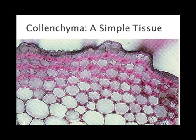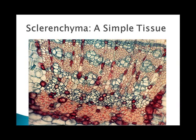Colenchyma cells are thickened and help to strengthen the plant — for example, the strings in celery. It's commonly arranged as strands or cylinders beneath the dermal tissue of the stems and stalks. The primary cell walls of colenchyma become thickened with cellulose and pectin at maturity, often at their corners. Sclerenchyma cells provide mechanical support and protection in mature plants. Their secondary walls are thick and often impregnated with lignin, which strengthens and waterproofs the cell walls. Sclerenchyma cells form fibers such as in hemp and flax; others are called sclerids and form strong coats around seeds, as in a peach pit.